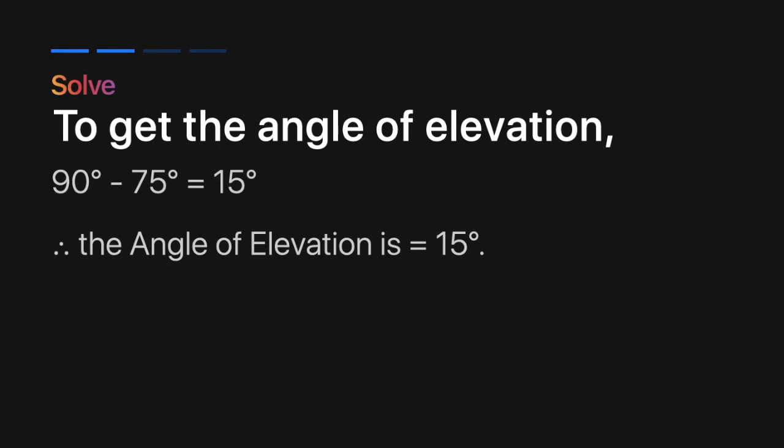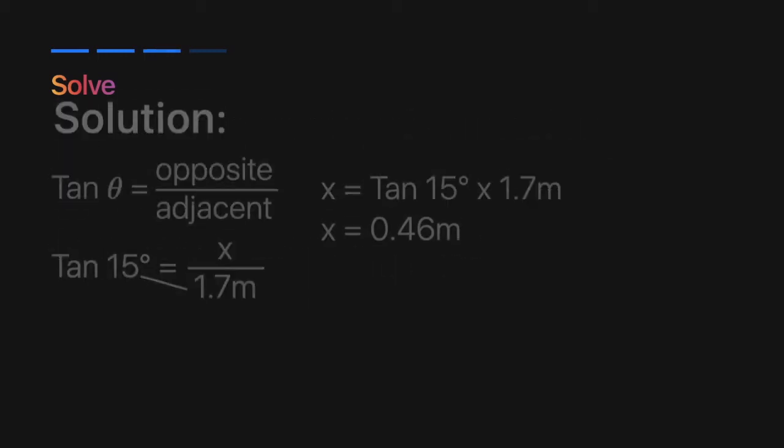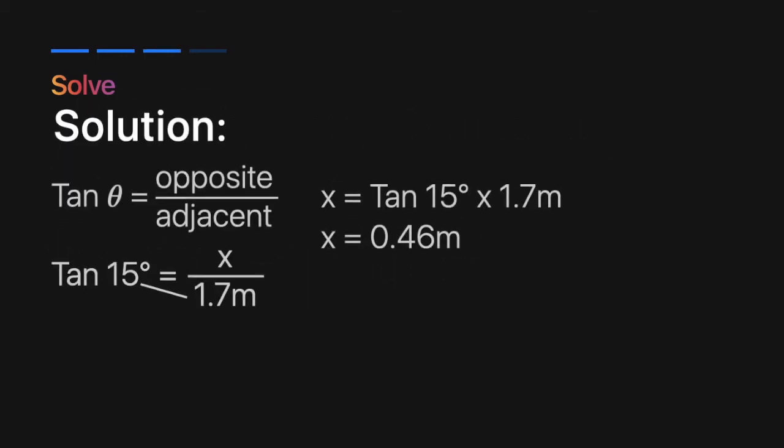To get the angle of elevation, subtract 75 degrees from 90 degrees and we'll get 15 degrees. Therefore, the angle of elevation is 15 degrees. In this problem, we use TOA. Tangent theta equals opposite over adjacent. Then distribute all terms and it will be tangent 15 degrees equals x over 1.7 meters.